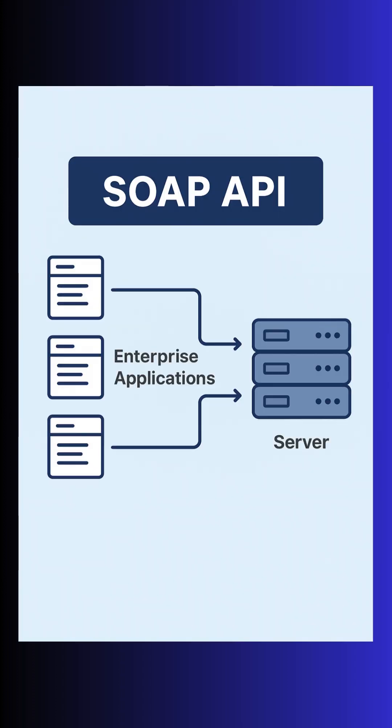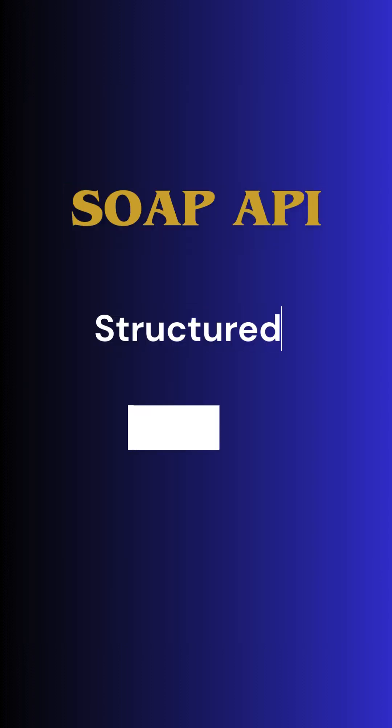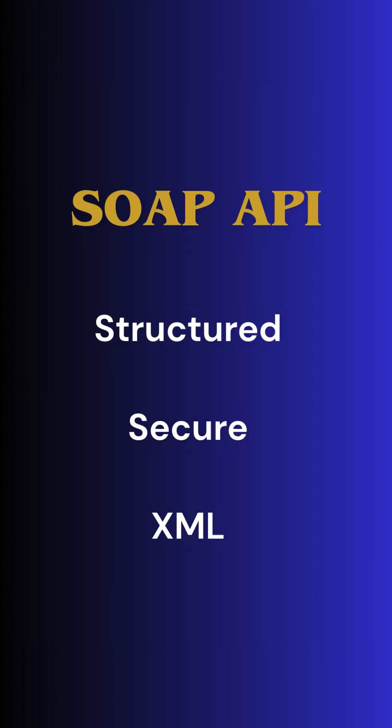Now, SOAP API. This one's more like sending a registered letter — secure, structured, and with strict rules. It uses XML for messaging and often comes with built-in security features. Great for complex enterprise needs where reliability is key.